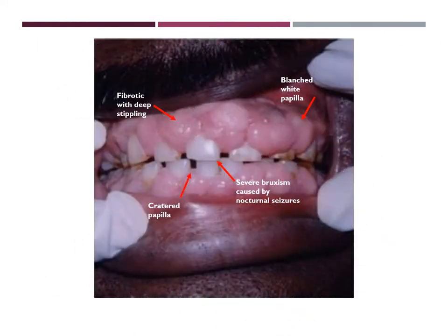In this other gingival image, you can clearly see a texture that is fibrotic with deep stippling, as well as cratered papilla. You can also see the effects of Dilantin, which is the blanching of the papilla. Some epileptic patients experience nocturnal seizures, which causes severe bruxism and overall can cause wearing down of the enamel and tooth structures.